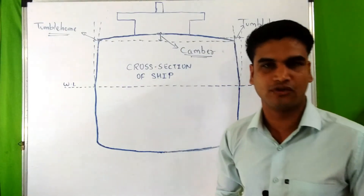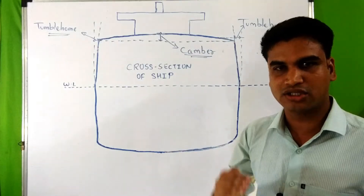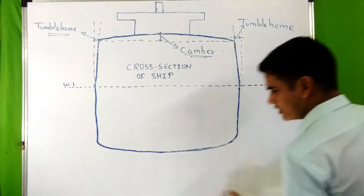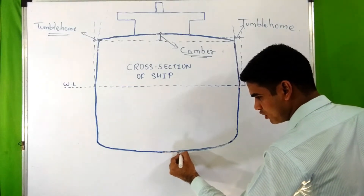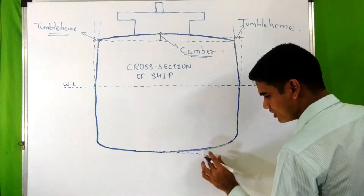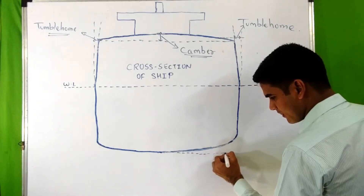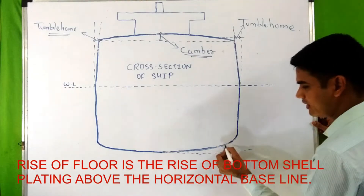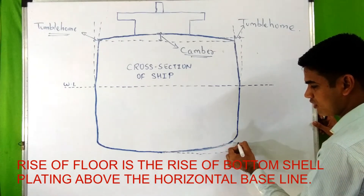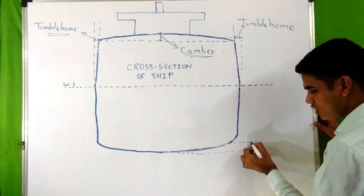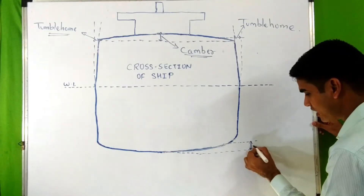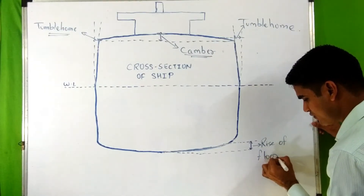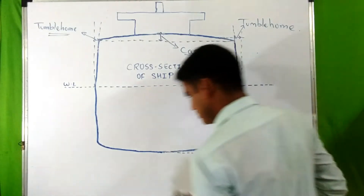Tumble home is also measured at midship. Next is rise of floor. Rise of floor is actually the rise of bottom shell plating above the horizontal baseline. You can see this is the horizontal baseline — we discussed about the baseline in the last video on ship dimensions. This vertical distance is known as rise of floor.